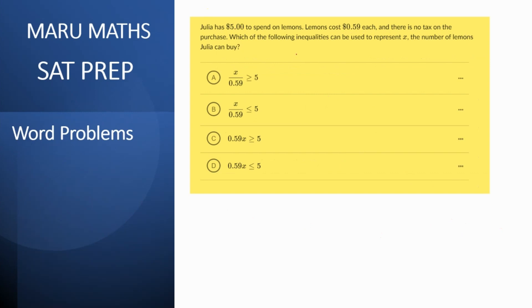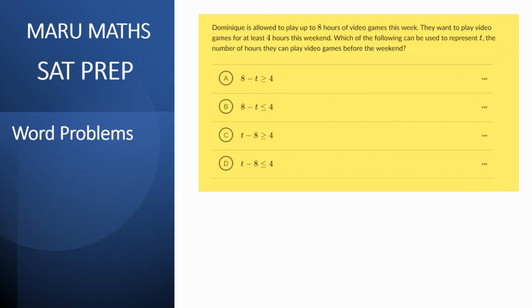So the maximum lemons she can buy with five dollars, it's going to be less than or equal to five dollars. Cost of each lemon is 0.59. So it would be 0.59 times x should be less than or equal to five. In this case this is the d option over here which is the number of lemons that she would be able to buy. Let's take a look at the next question now.